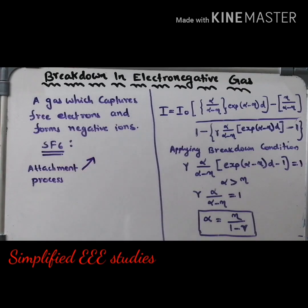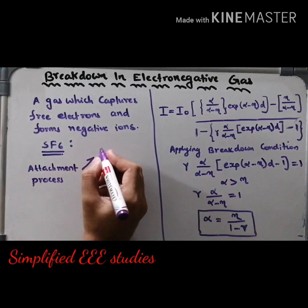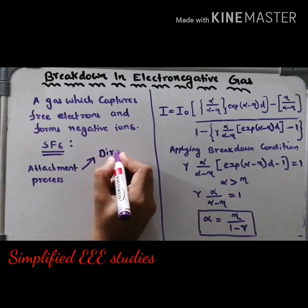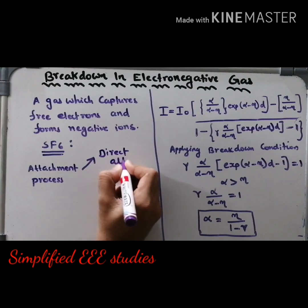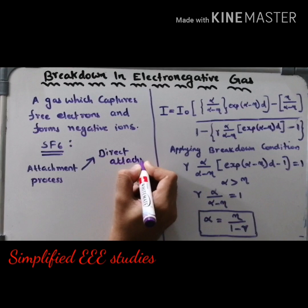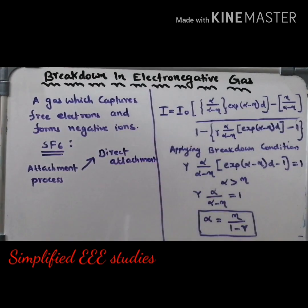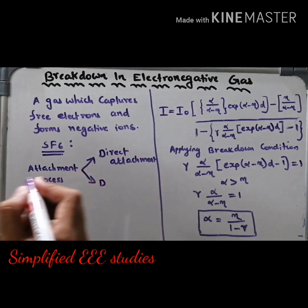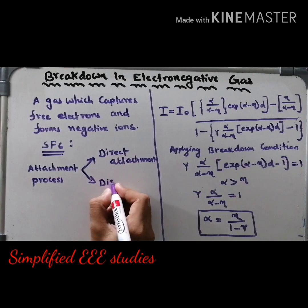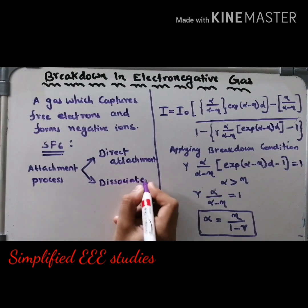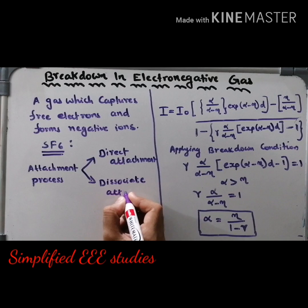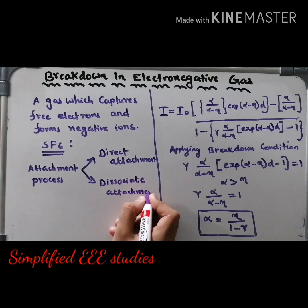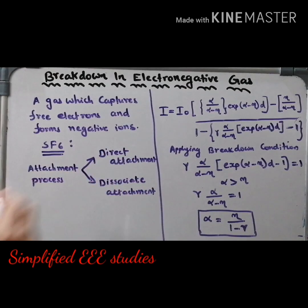There are two types of attachment process. The first one is known as direct attachment, and the second one is known as dissociative attachment. These are the two subdivisions of the attachment process.